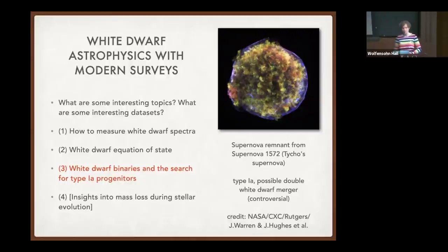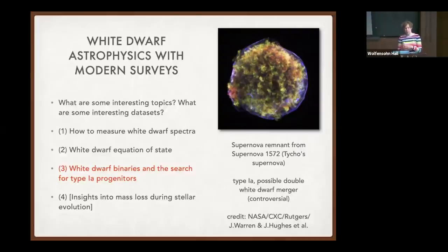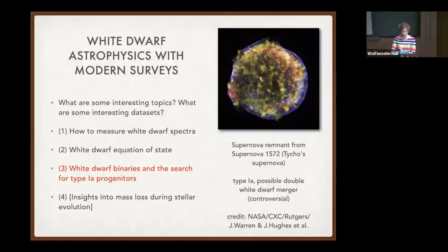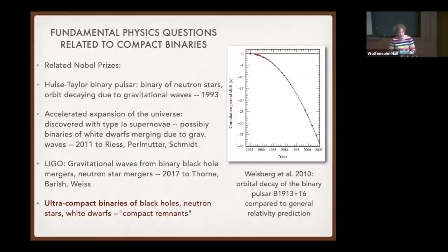Here is the outline of my talk. I'll give a very broad introduction to some of the interesting topics and data sets we're thinking about. I'll talk about three projects: one is how we learned to measure white dwarf spectra, the first application measuring the white dwarf equation of state, and then I'll spend the bulk of my time on the search for white dwarf binaries and how that relates to the search for the progenitors of type 1a supernovae.